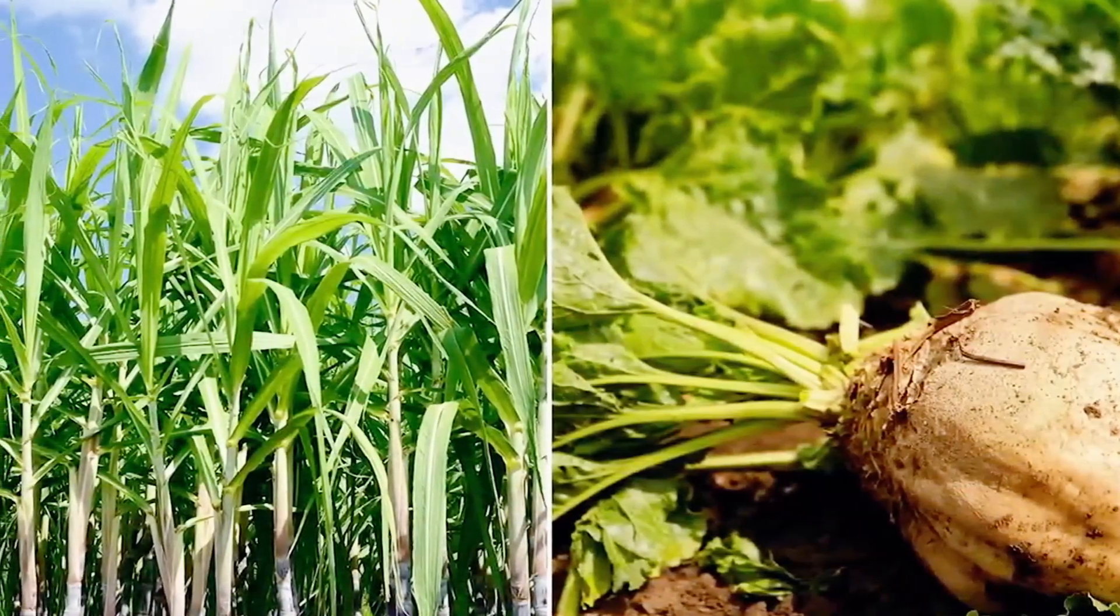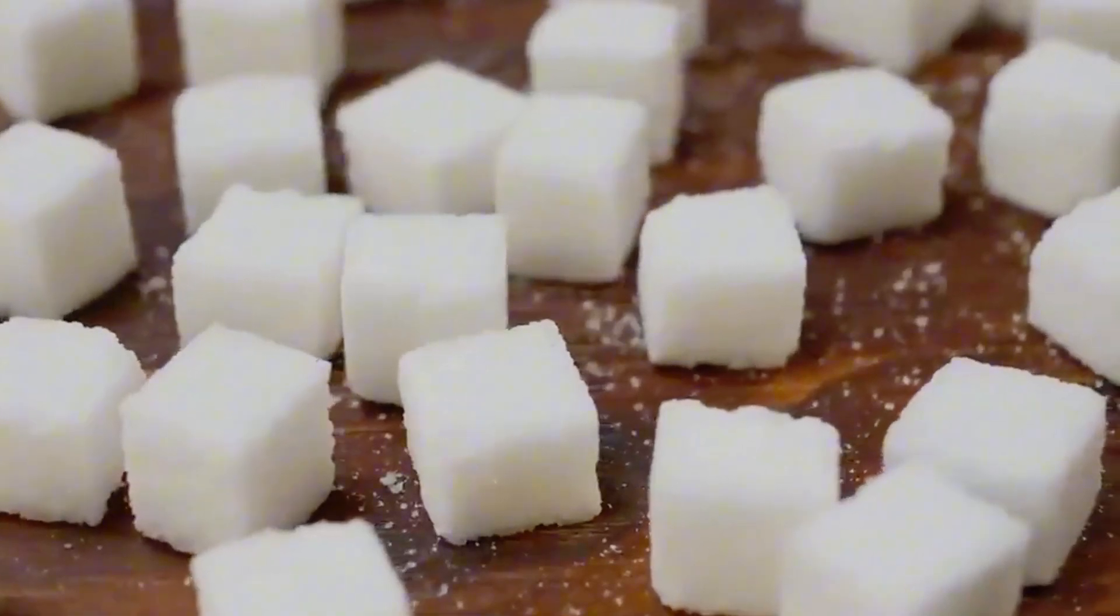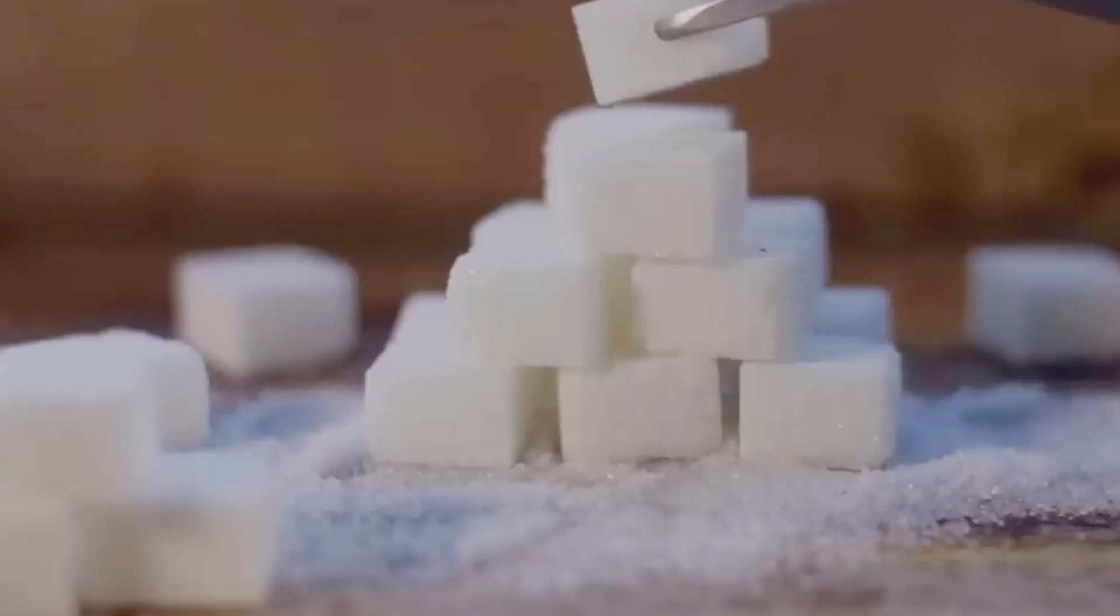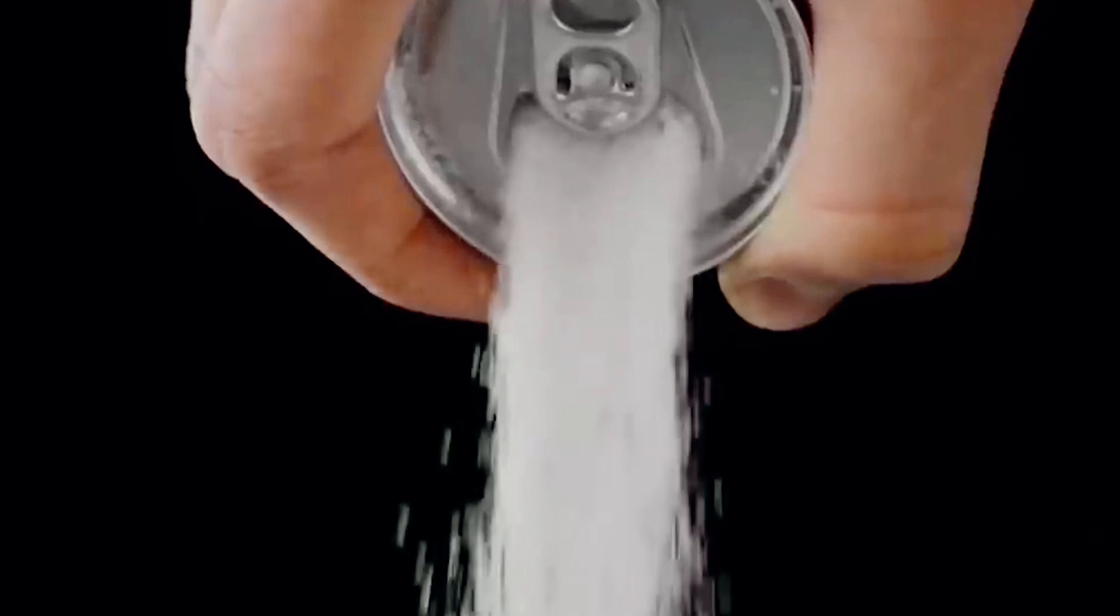Whether it's from sugar cane or sugar beets, the journey of sugar involves agriculture, science, and a series of well-coordinated steps that turn natural plants into the refined sugar we know.